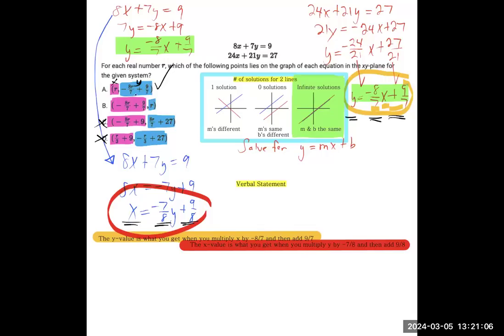Answer choice B is saying that the x value is what you get when you take the y value, r, and multiply it by negative 8 over 7, and add 9 over 7. Is that what it says right here? The x value is what you get when you take the y value, and b says you multiply by negative 8 over 7, but we see negative 7 over 8. And then we should be adding 9 over 7, but here we see 9 over 8. So the x statement didn't work out, but the y one did.